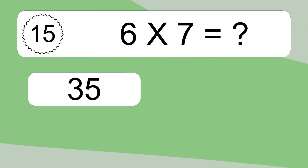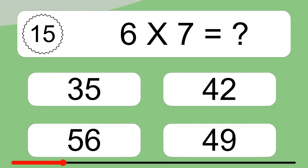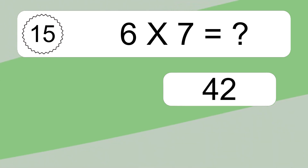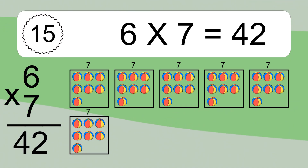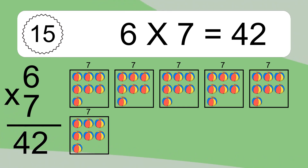6 times 7 equals what? 6 times 7 equals 42. We have 6 boxes, and each box has 7 colorful balls inside. If you count all the balls in all the boxes together, you will have 6 times 7 balls. This equals 42 balls.